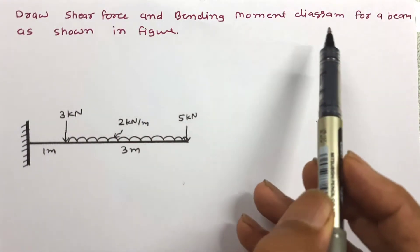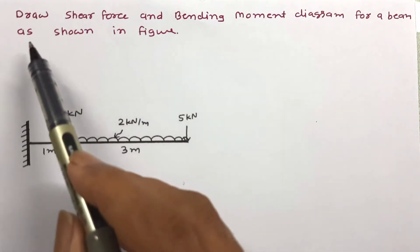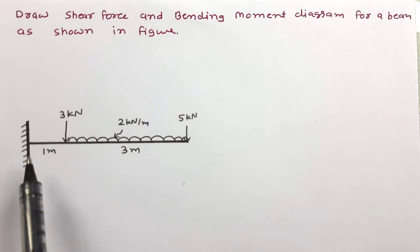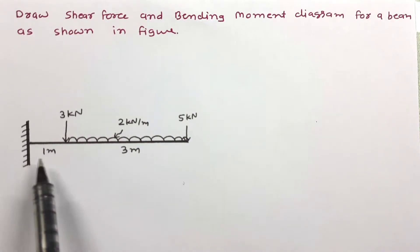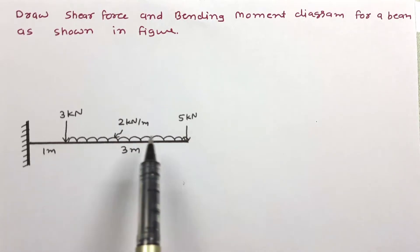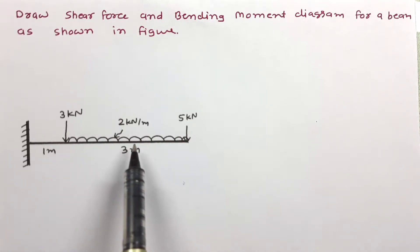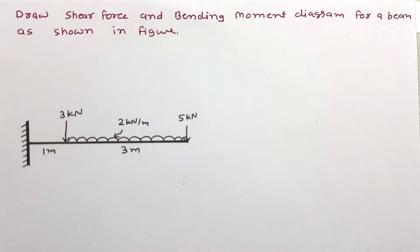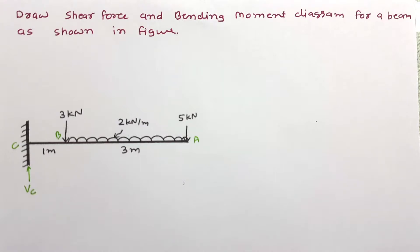Draw shear force and bending moment diagram for a beam as shown in figure. We have given a cantilever beam with a total span of 4 meters, 2 point loads and 1 UDL acting on this beam. There are 3 important points: A, B, and C.